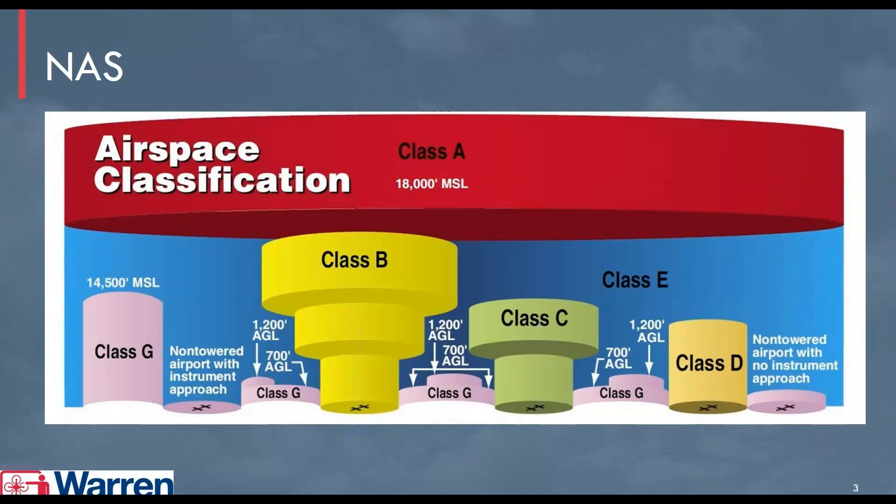One of the things to realize is that to control air traffic, the Federal Aviation Administration has created a classification system for airspace within the national airspace system. This classification system is broken down into several levels. The easiest way to think of it is A, B, C, D, E, and G airspace. But what do these classifications mean?